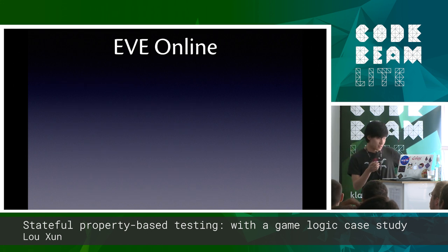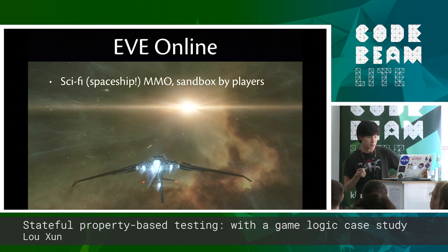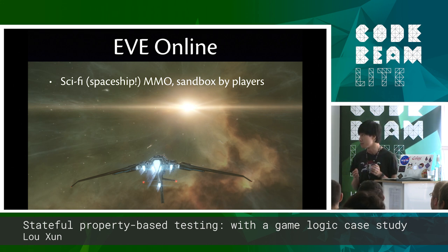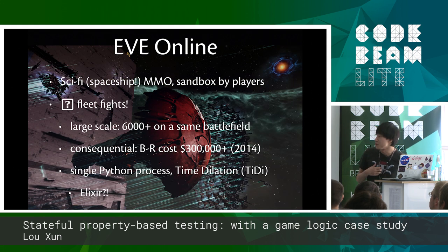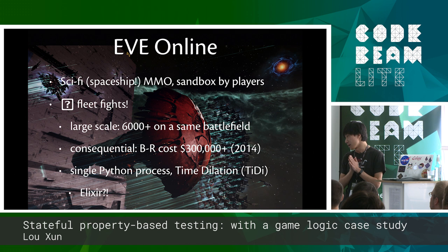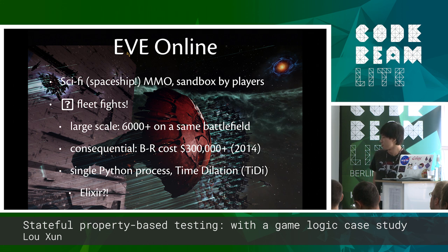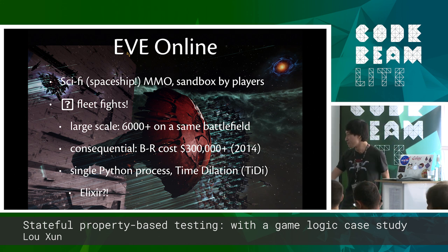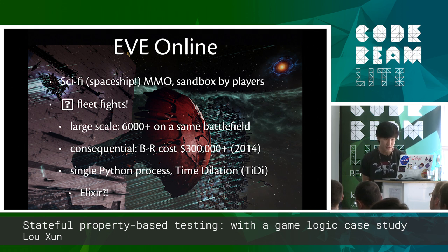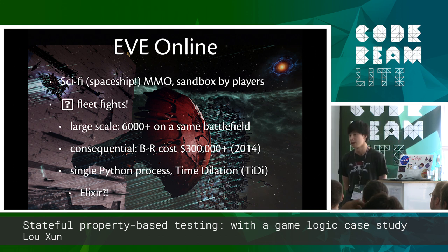As a company, CCP Games makes EVE Online. It's a sci-fi massively multiplayer online game, it's also a sandbox mostly driven by our players. Things like the economy and the production of most items in the game are all done by our players. What interests me the most are Fleet Fights in EVE. Fleet Fights in EVE are very unique — first of all, it's very large scale. Our current record is more than 6,000 players on the same battlefield, all fighting for one goal. And it's also very consequential — for example, the record battle of B-R5RB costs more than 300,000 dollars. That is the rough translation of our in-game currency to real-world money, and that happened in 2014, so in the last four years this record has been broken many times.